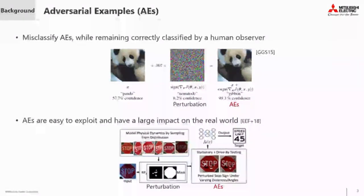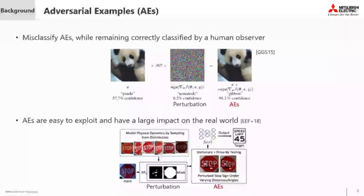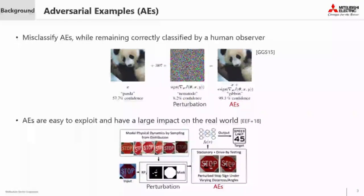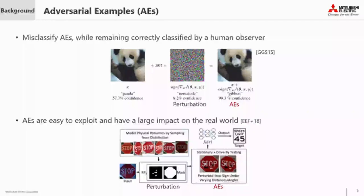AEs add small perturbations to the input data of a deep learning model to cause misclassification. AEs are easy to exploit and have a large impact on the real world. For example, attaching a small sticker to a road sign as an AE causes an automated driving system to misrecognize a stop sign as a speed limit sign.